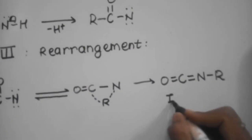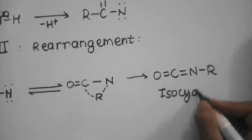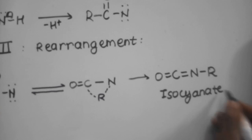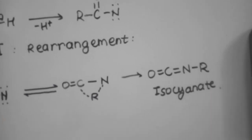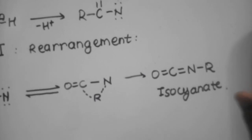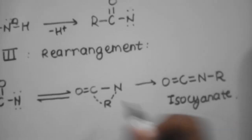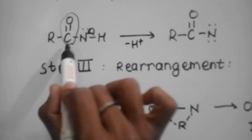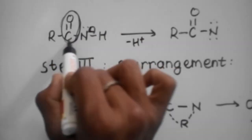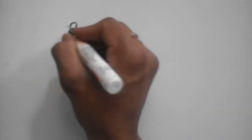After the bridge forms, the alkyl or aryl group gets completely transferred to the nitrogen to give an isocyanate molecule. This isocyanate instantly undergoes hydrolysis to form a primary amine. Since one carbon is removed, we get a lower primary amine — this is the Lossen rearrangement for the acid-catalyzed pathway.